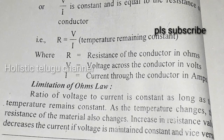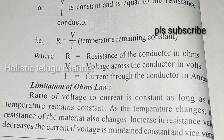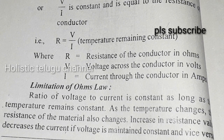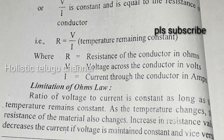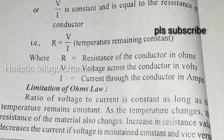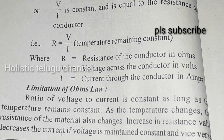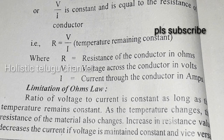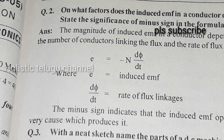Limitations of Ohm's law: the ratio of voltage to current is constant only as long as temperature remains constant. As temperature changes, the resistance of the material also changes. An increase in resistance decreases the current if voltage is maintained constant, and vice versa.